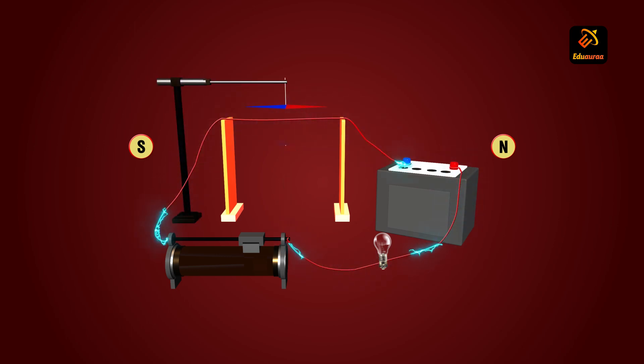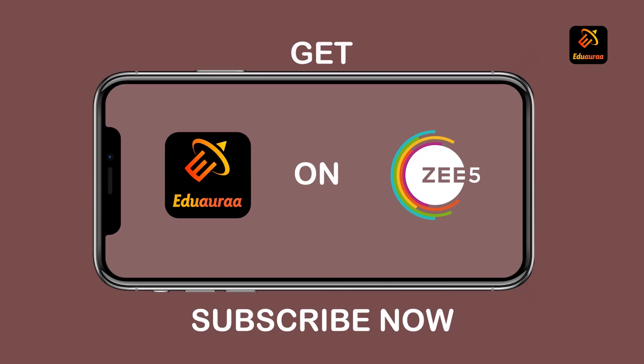And when we bring about a compass, we will see a deflection in the compass. Normally the compass only shows north-south direction. But near a wire, it will show other deflection than north-south.